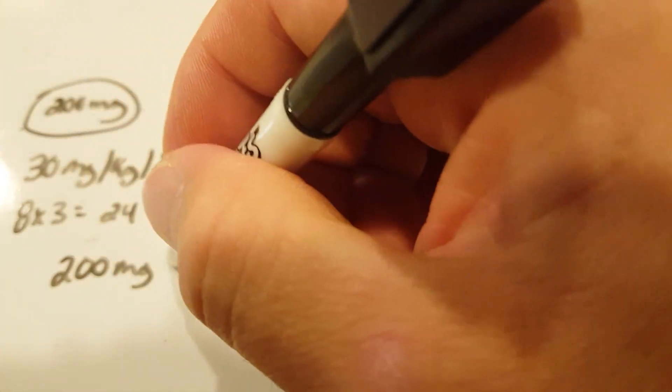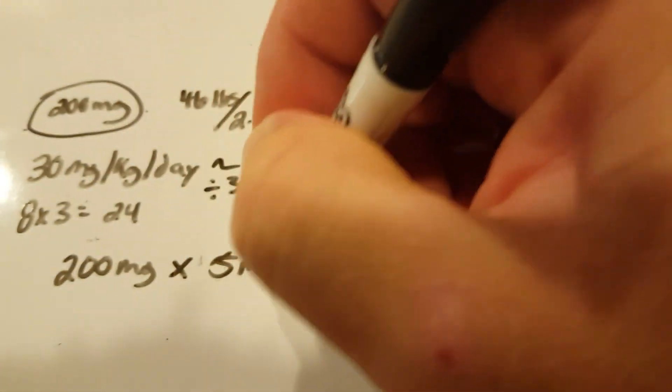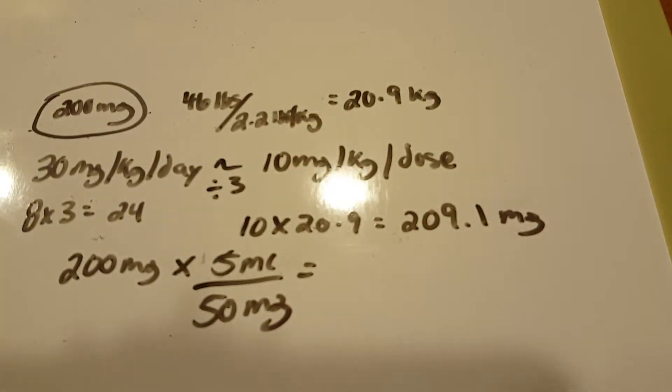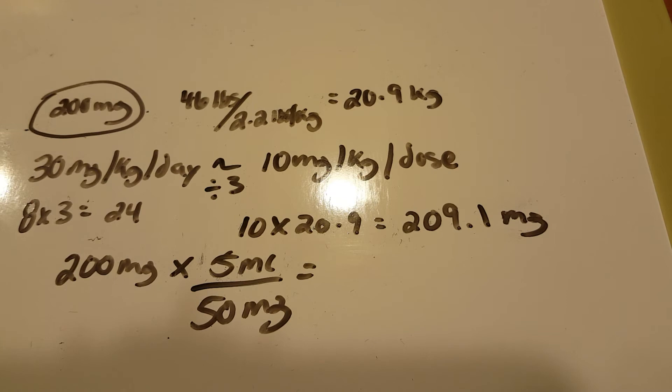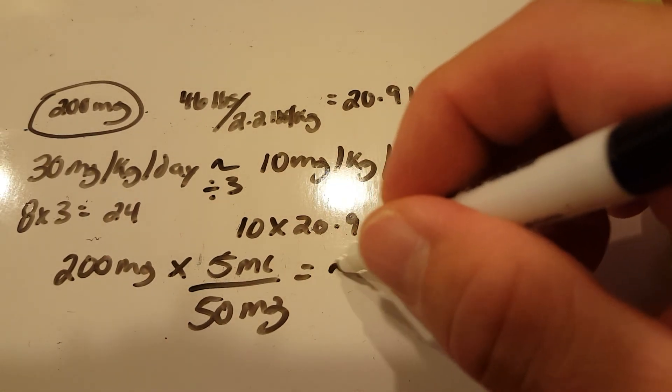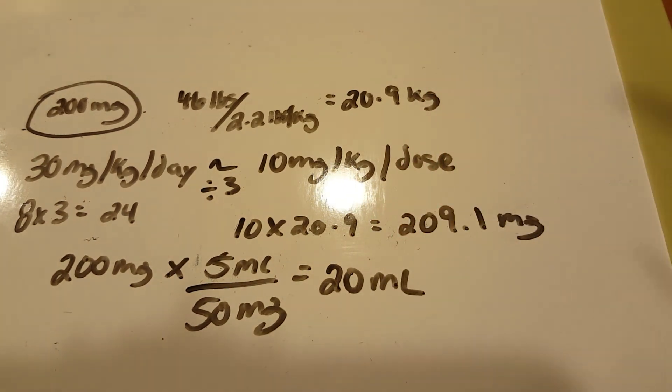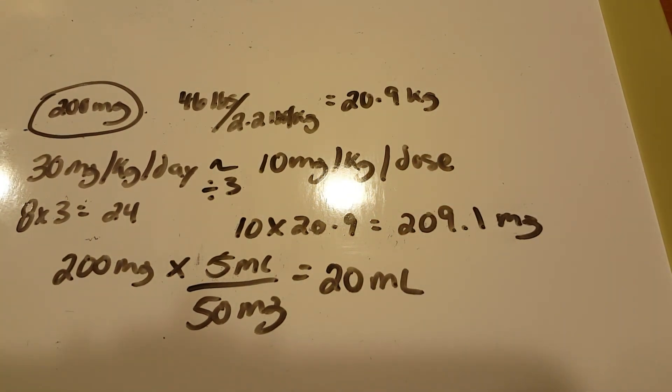And then as far as how many milliliters to administer, we have the 200 milligrams. And it said it came 50 milligrams per 5 ml. 200 times 5 is 1,000 divided by 50. And we would administer, if you are to administer it, 20 milliliters of this particular medication.